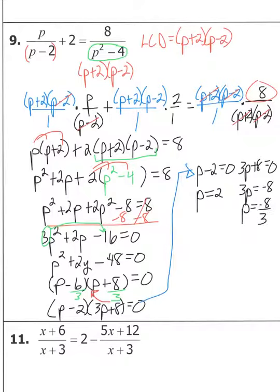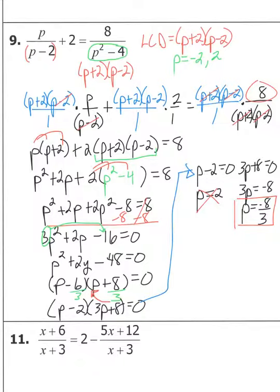With two answers, check restrictions. Setting each denominator factor equal to zero: p cannot equal negative two (from p plus two), and p cannot equal positive two (from p minus two). Since p equals two is one of our restrictions, we must eliminate it. P equals negative eight over three is not a restriction, so negative eight over three is the only valid solution. If you have any more questions, feel free to ask. The full notes are online on the website.